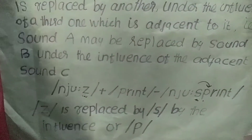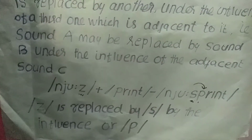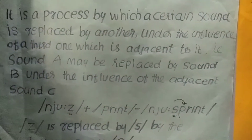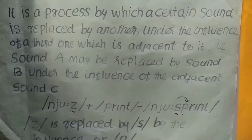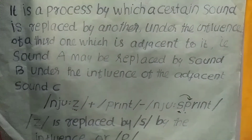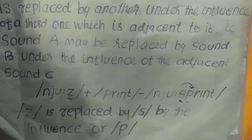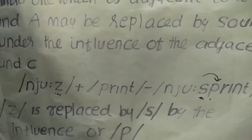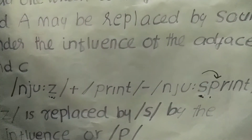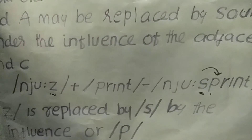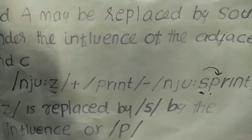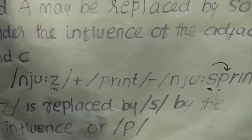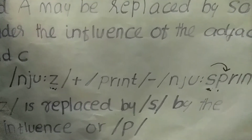In summary, sound one is replaced by sound two because of the influence of the third adjacent sound. That is assimilation.